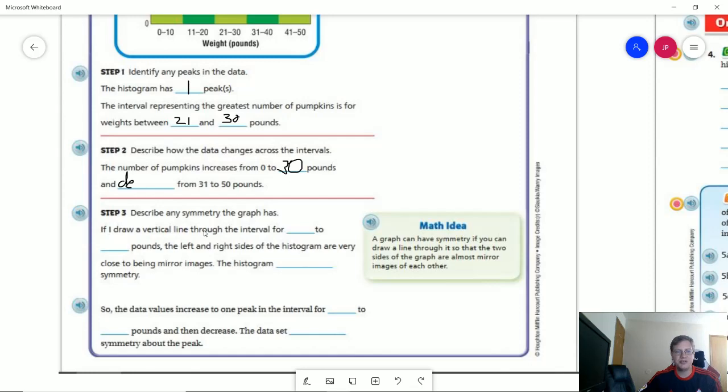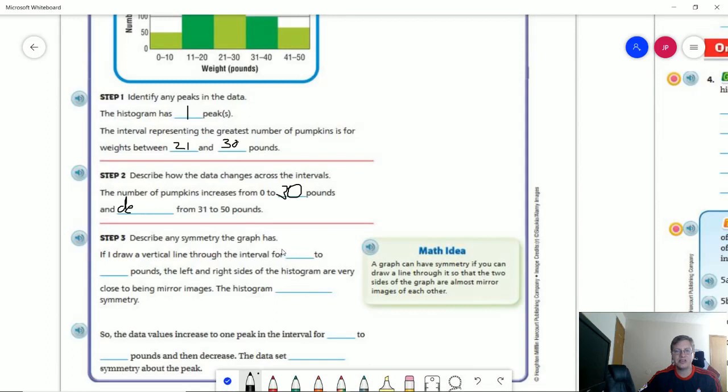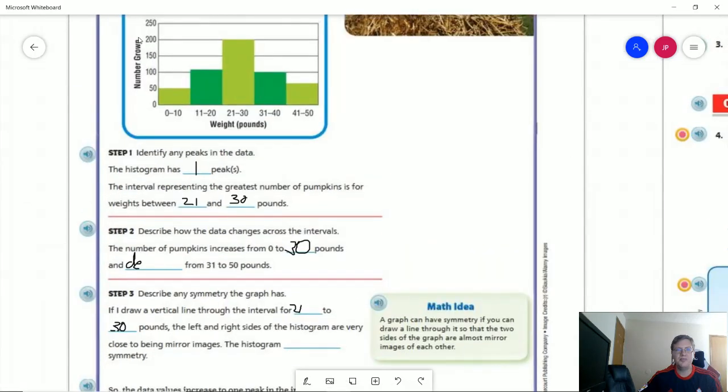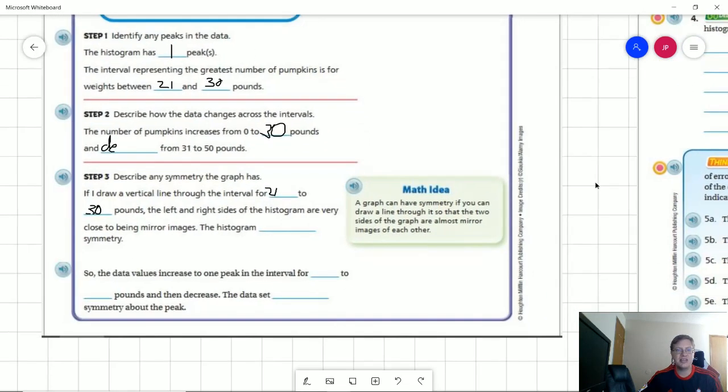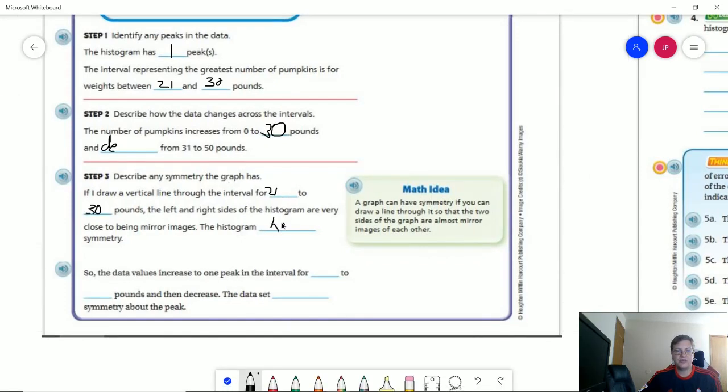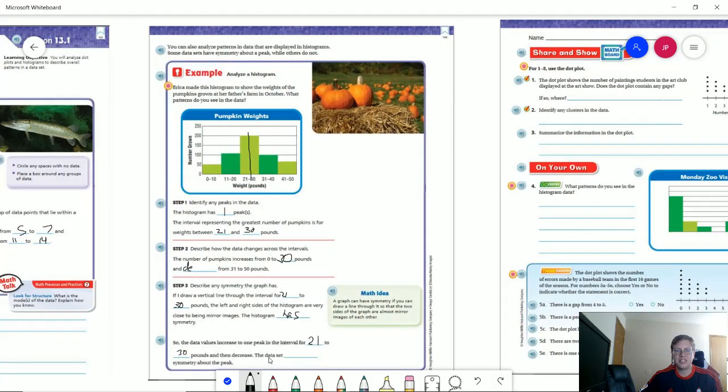Number three, describe symmetry. So if I drew a vertical line through the interval for 21 to 30 pounds, the left and right side would be close to mirror images. So if I scroll up just a little bit here, if we drew a line through here. So our left hand side and our right hand side are pretty close to mirror. There's a little bit more variance between the light green compared to the dark green, but it's close enough that we could say that that could be having symmetry. So the histogram has symmetry, the data points increase to one peak interval. And then they want you to relate what the peak interval again was. And that went up to 30, I believe. And actually we already have it there. So it would be 21 to 30.